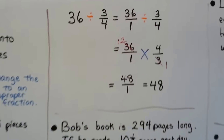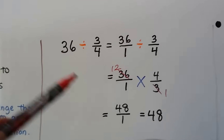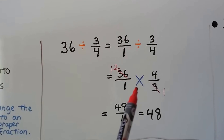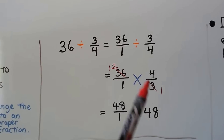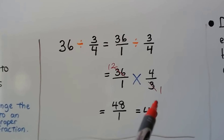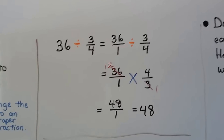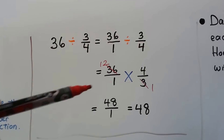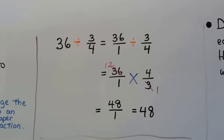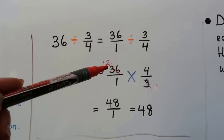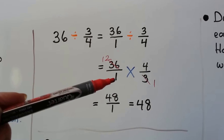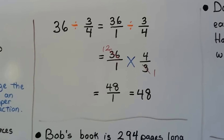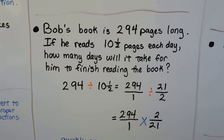We have 36 divided by 3/4. We turn the 36 into 36 over 1, then flip 3/4 to 4/3 and change to multiplication. Using cross canceling: there is one 3 in 3 and twelve 3s in 36, so that becomes 12 and 3 becomes 1. Now multiply: 12 times 4 is 48 over 1 times 1 is 1 — the answer is 48. Cross canceling goes quicker and avoids a lot of reducing.